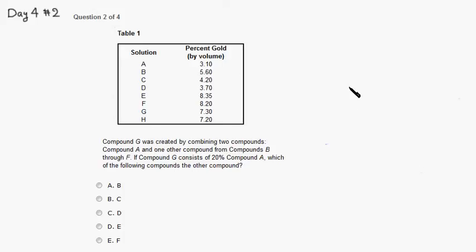Okay, let's go over day four, number two. So compound G has 20% compound A and 80% of something else.